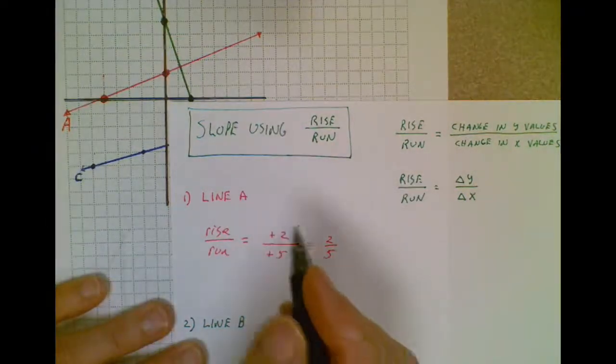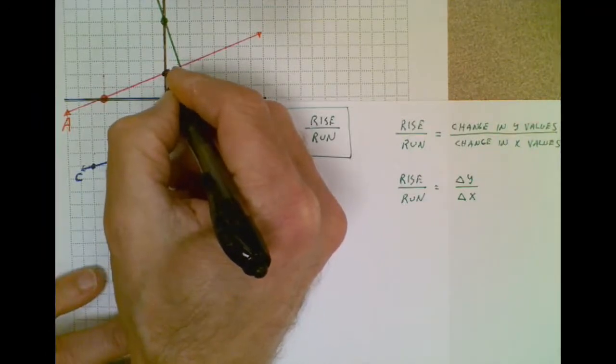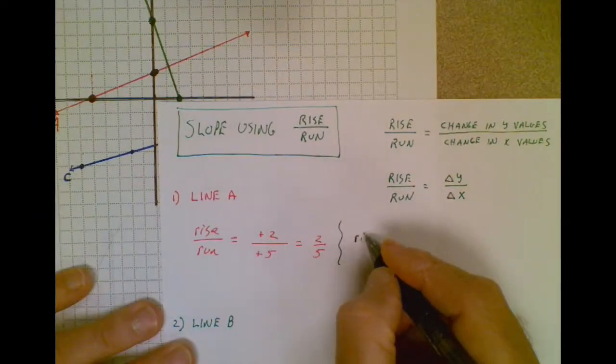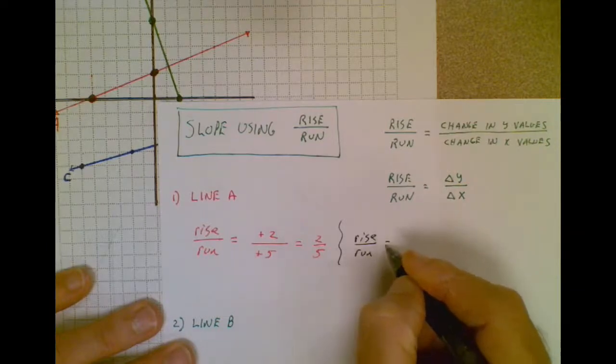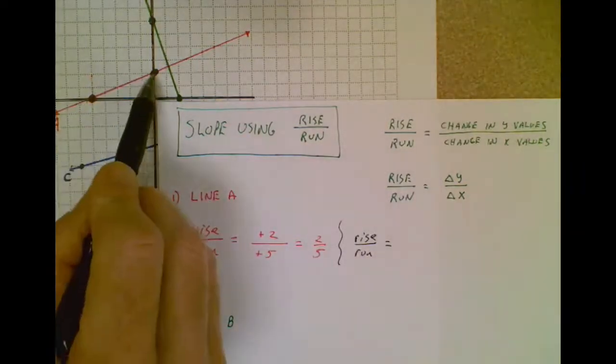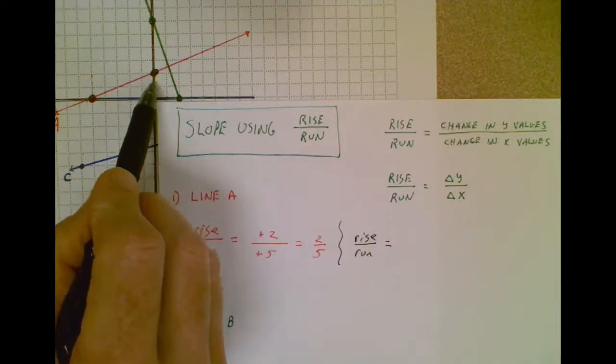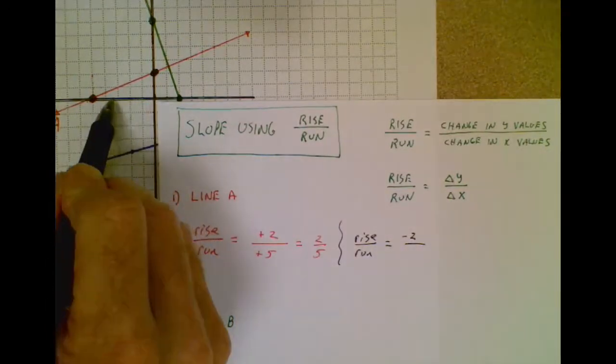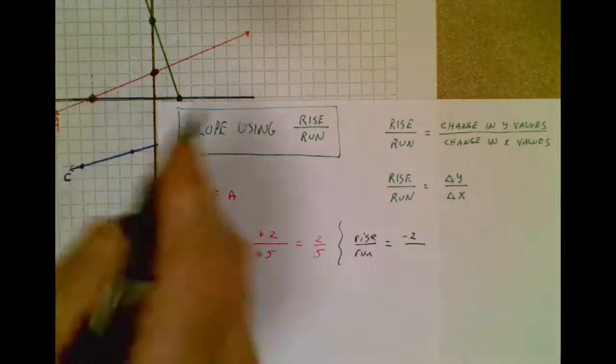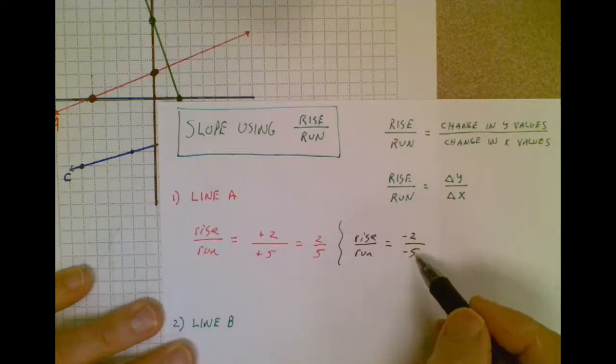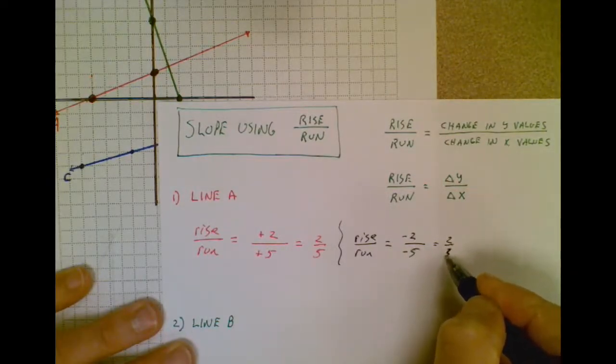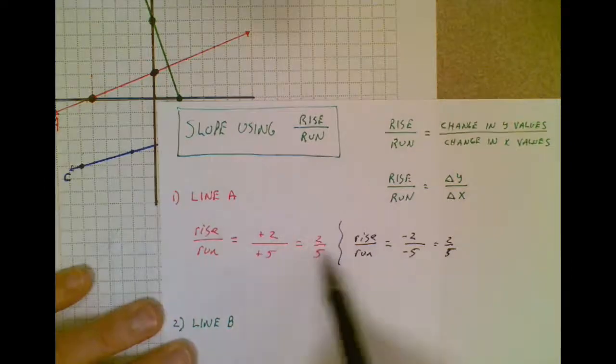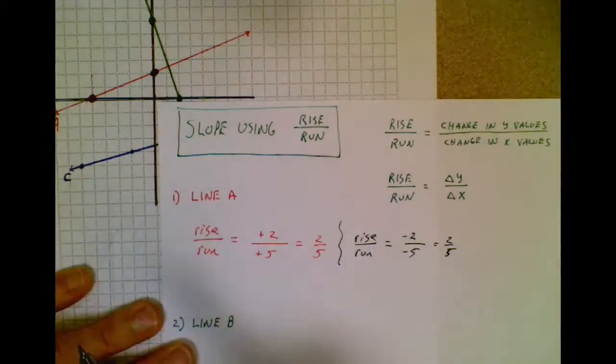Now let's say a different person looked at this problem, and they said, hey, I would like to start at this point and then travel to this point. They're going to get the same answer, and they would start off by saying rise over run. And now to go from here to here, my change in y, or my rise, I'd have to lower down two units. So my rise would be negative two, and my run traveling to the left, my change in x in the negative direction would be a negative five. A negative two divided by a negative five is a positive two-fifths, because a negative divided by a negative is a positive. So I've got two different ways, but they're still arriving at the same answer.